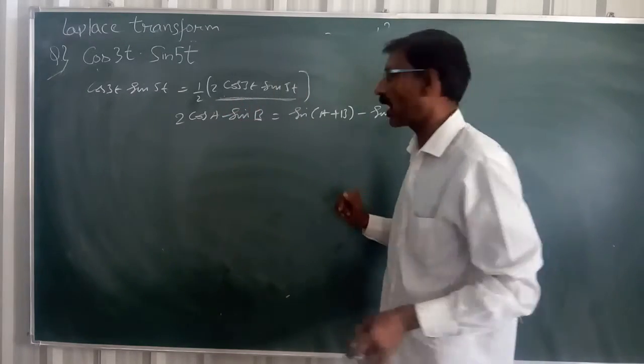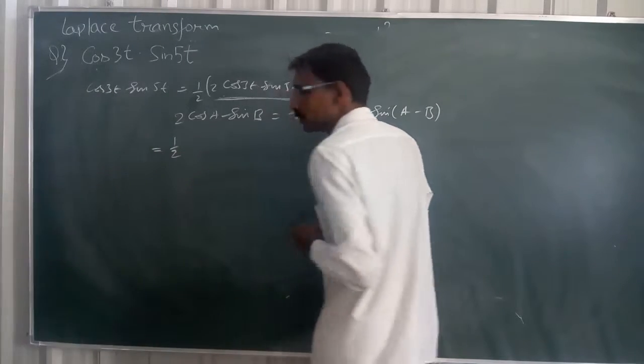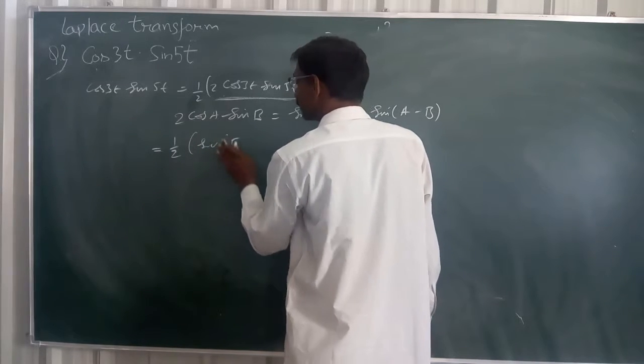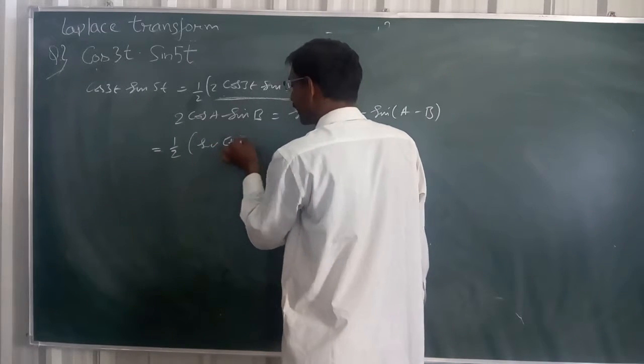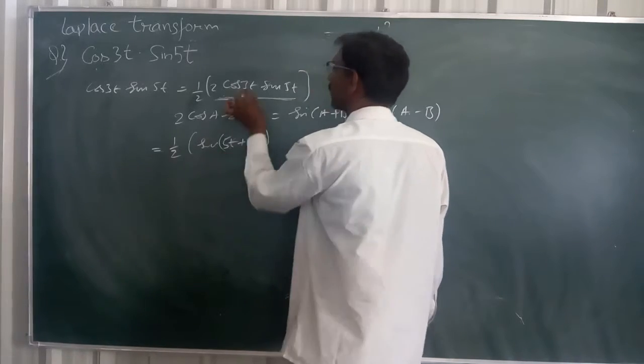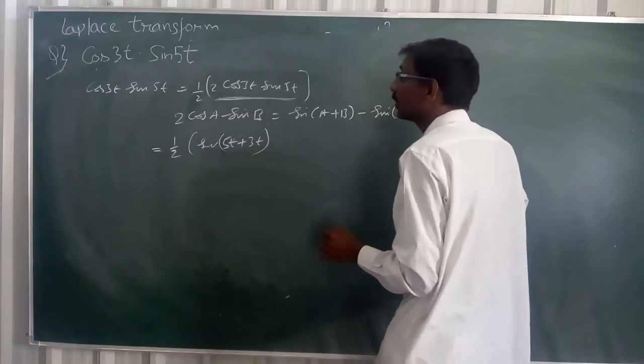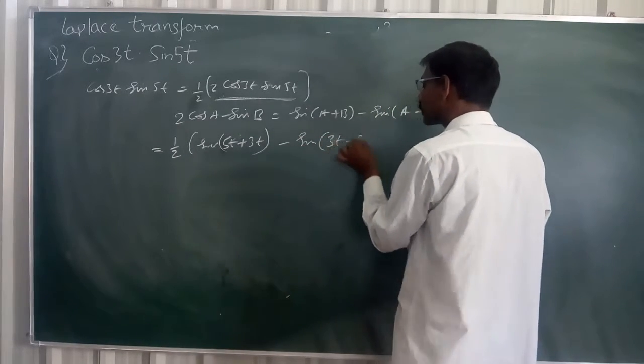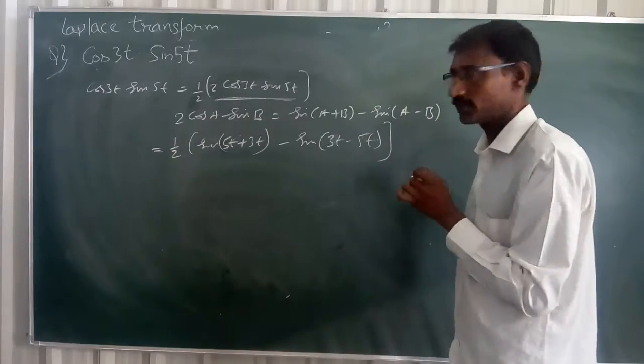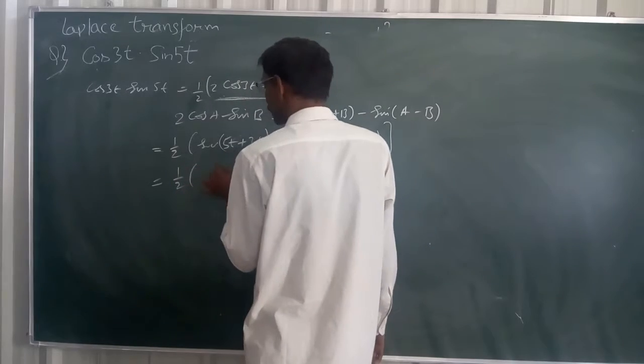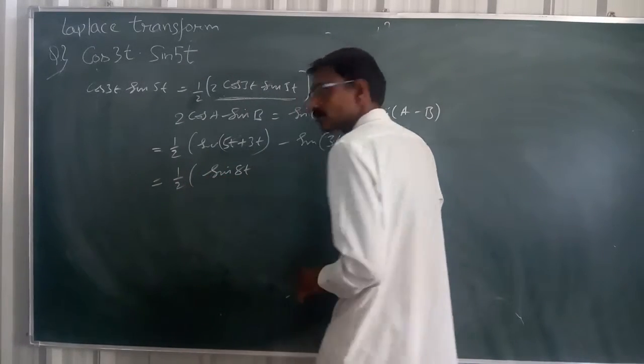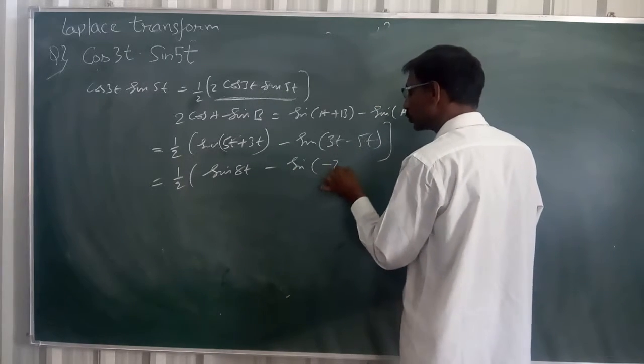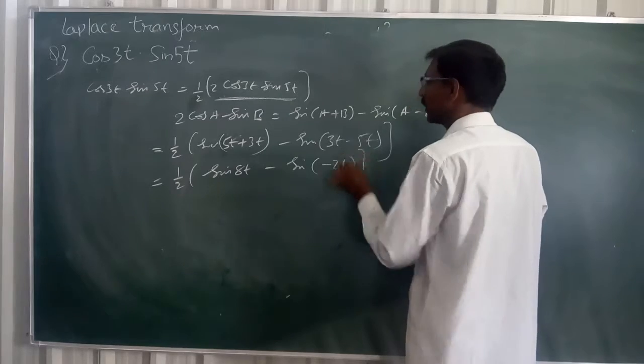By applying this formula, now I will get 1 by 2 into 1 by 2 into sine 5t plus 3t minus sine 3t minus 5t, isn't it? Now this is equal to 1 by 2 into sine 8t minus sin minus 2t, right?